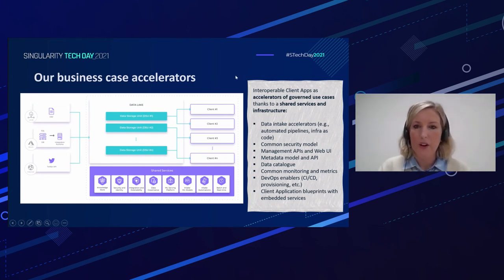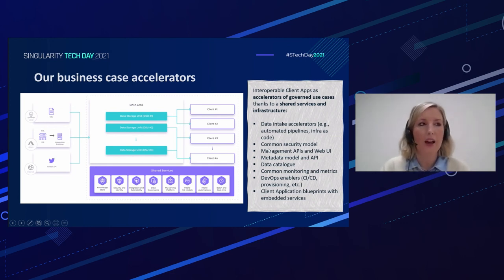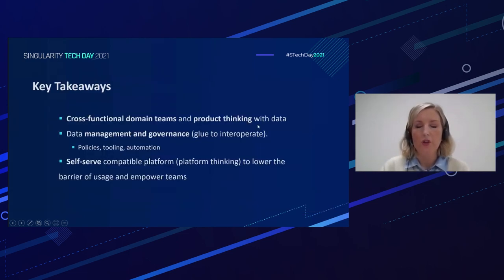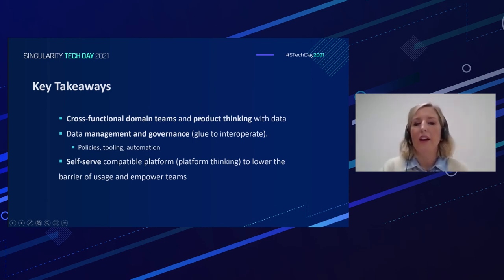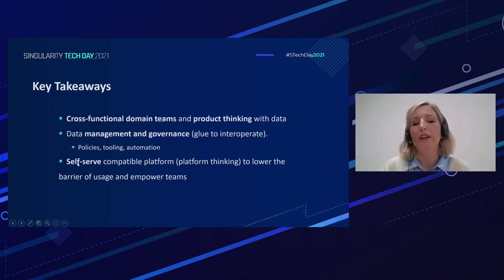All client applications are interoperable and follow governance rules. We need accelerators to build automated pipelines, orchestration as code, management APIs, a web UI, an extensive metadata API, and a data catalog for discoverability, plus provisioning capabilities for environments. To wrap up, three key takeaways: set up cross-functional domain teams, assign a product owner to each domain, and apply product thinking with data. Next, set up data management and governance — put in place policies, tooling, and automation to alleviate the need for scarce experts. Finally, set up a self-service compatible platform to lower the barrier of usage and empower teams.